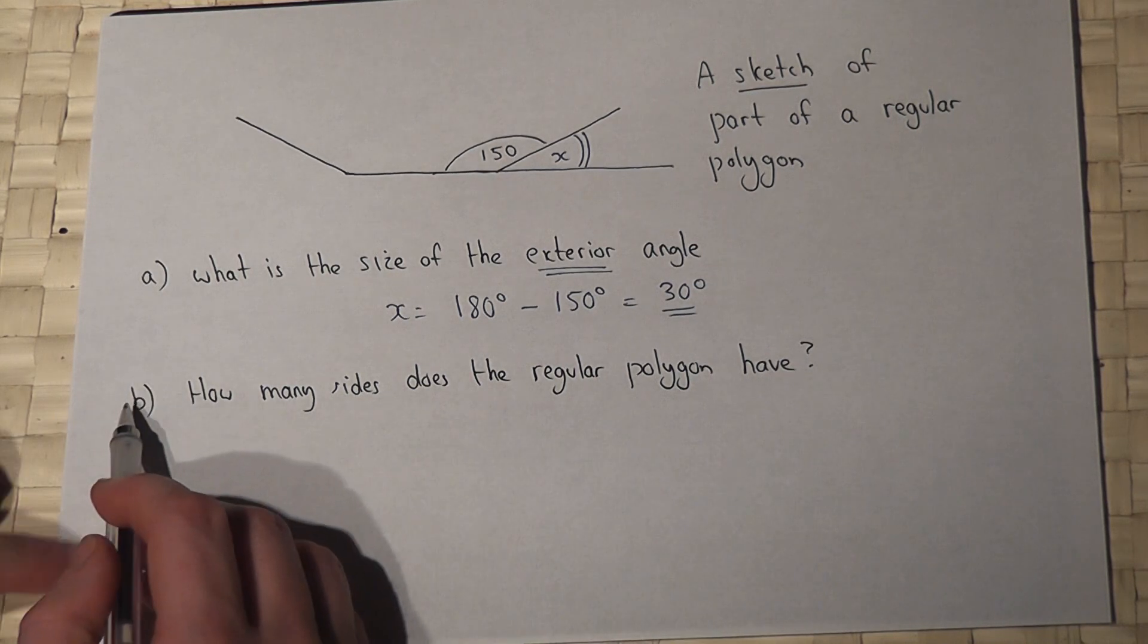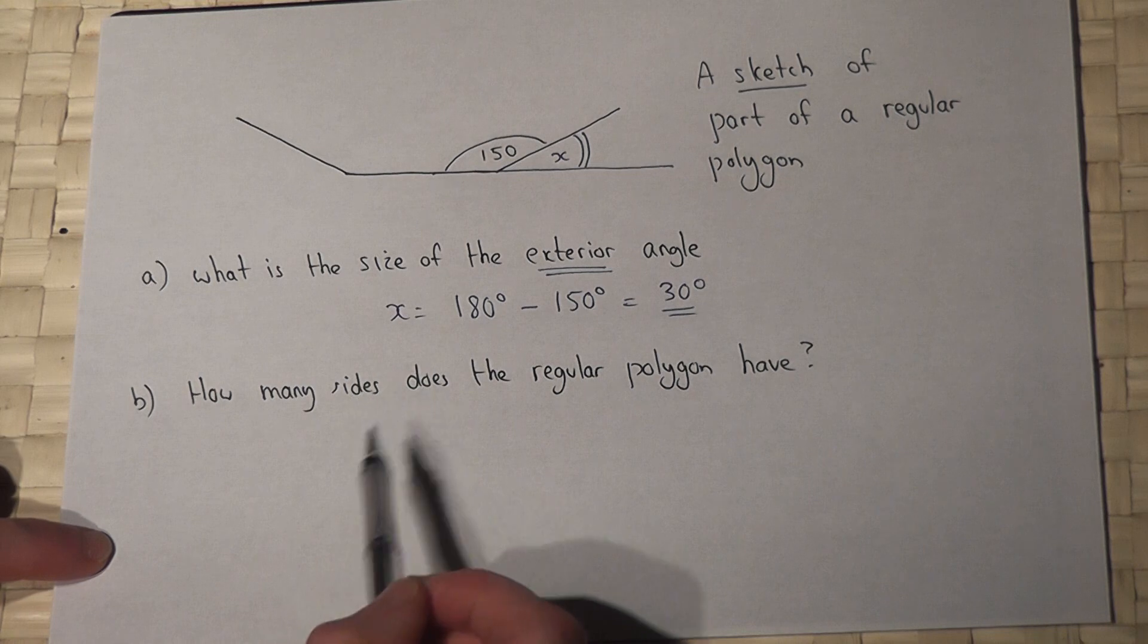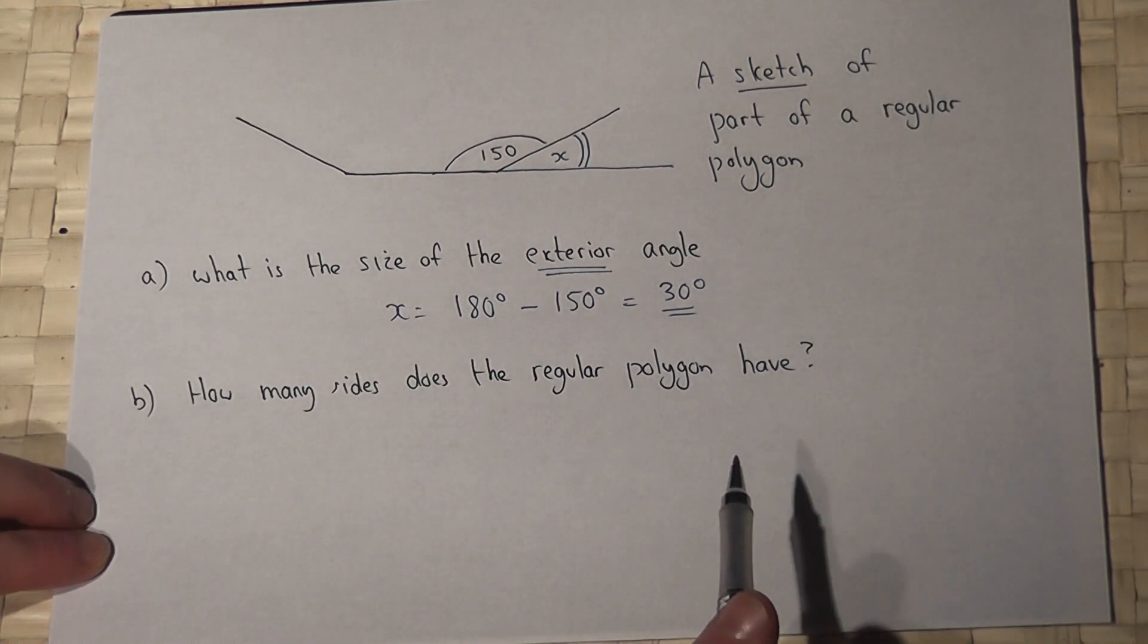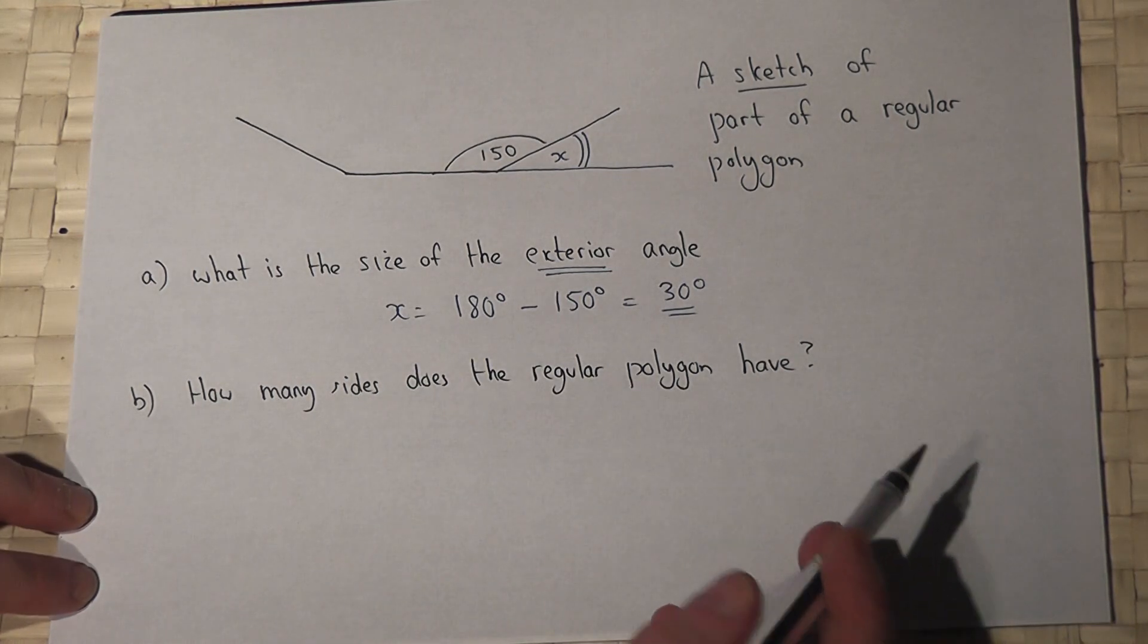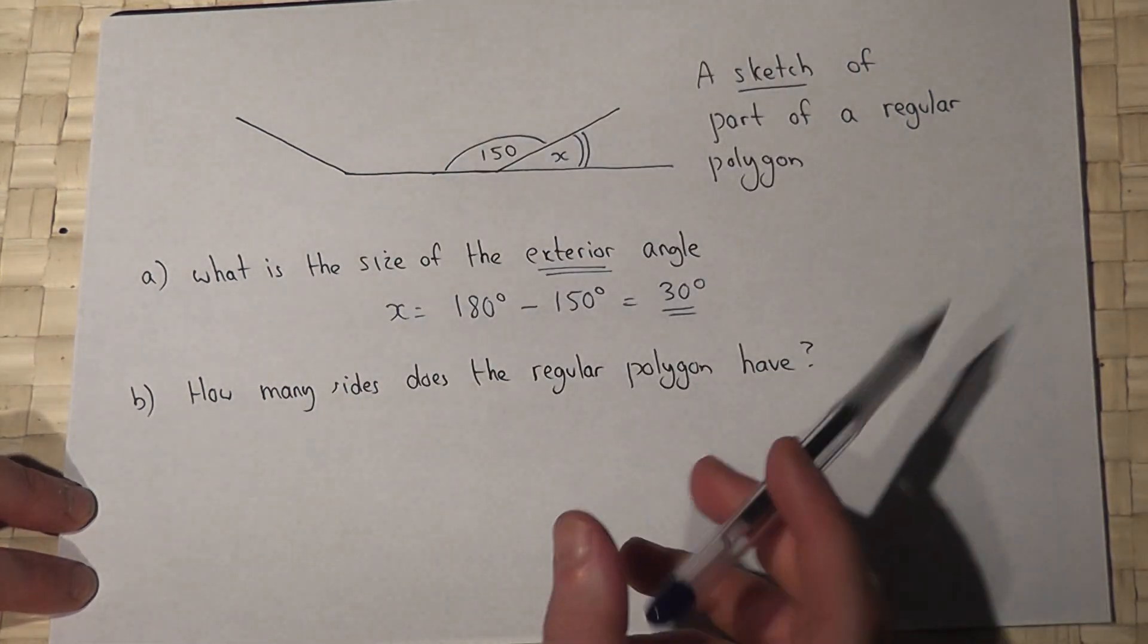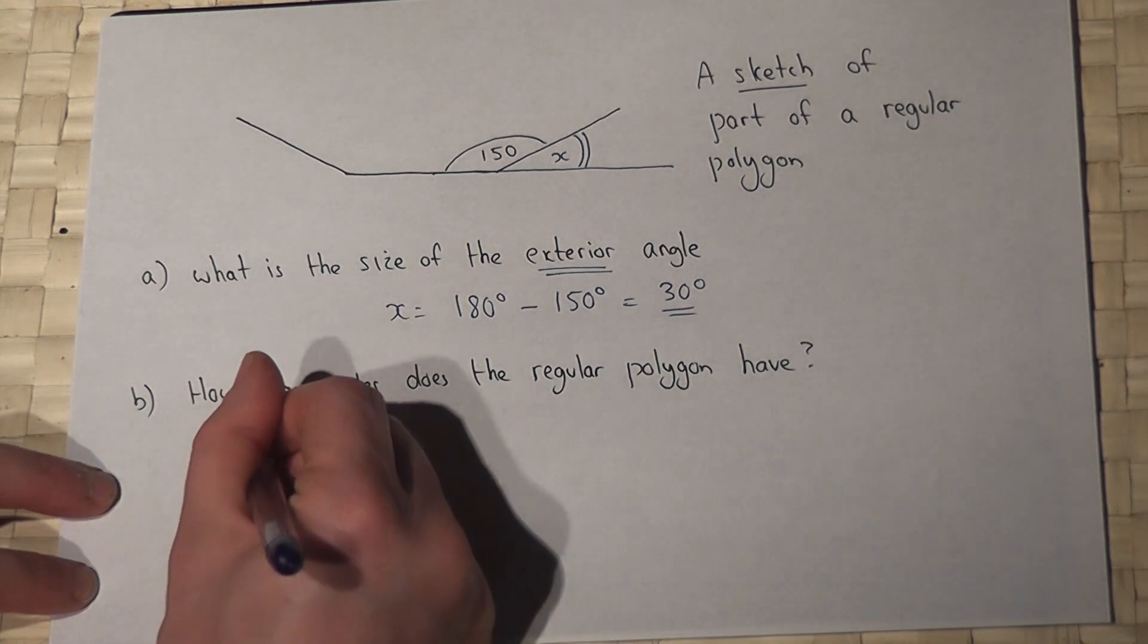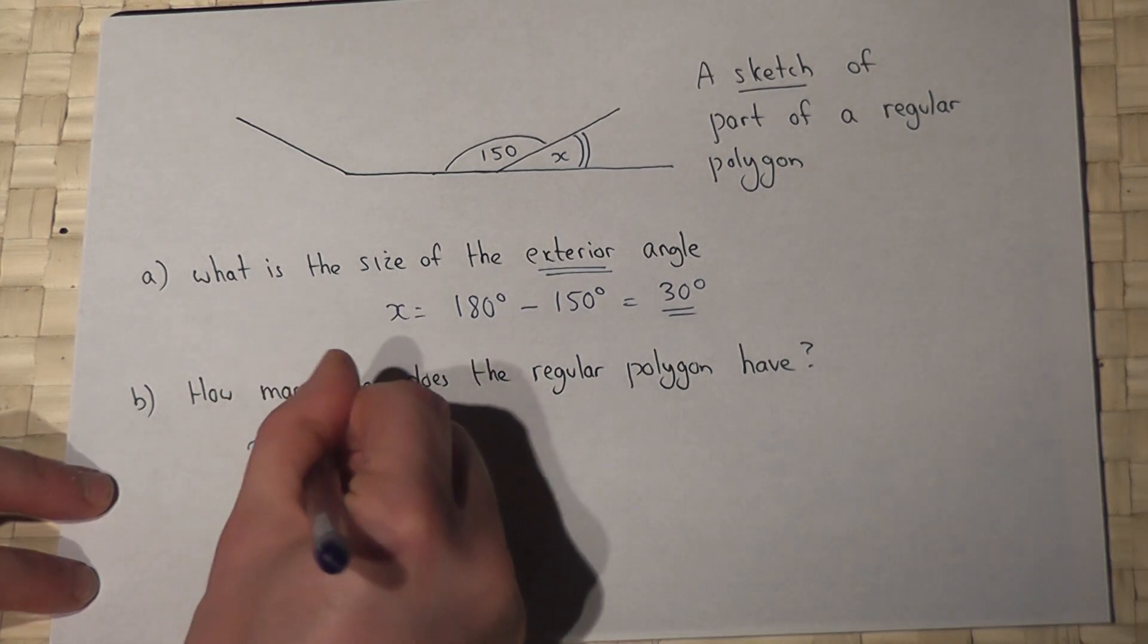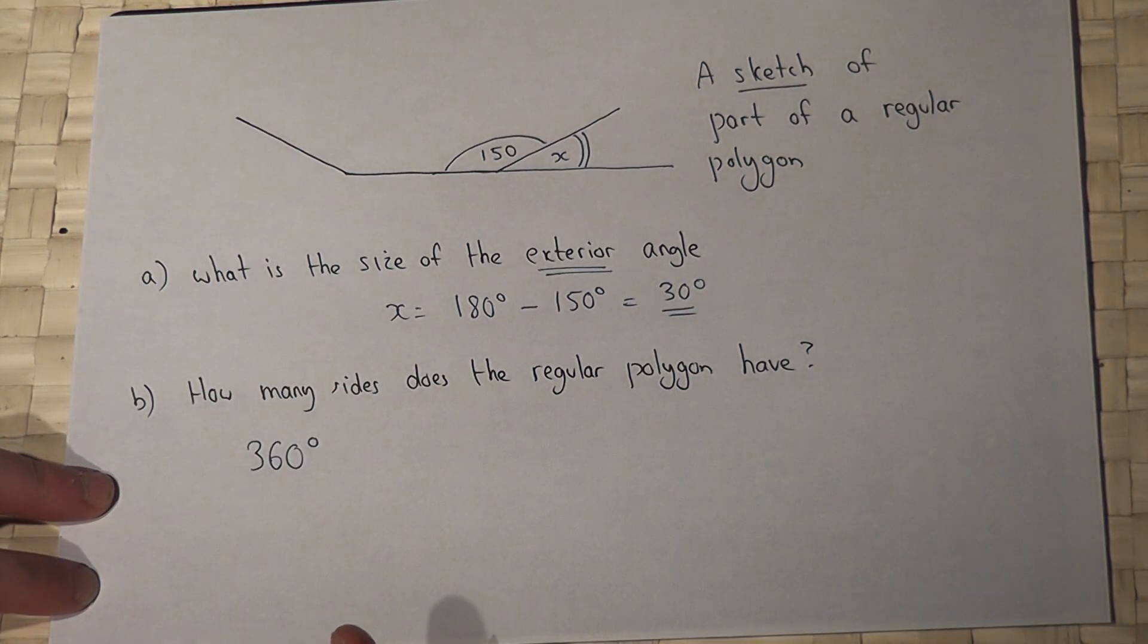Part B asks how many sides does this polygon have. Another key rule is that all the exterior angles always add to 360 degrees. So if each one of them has a size of 30...